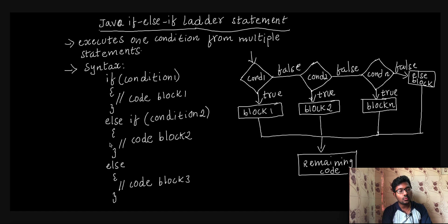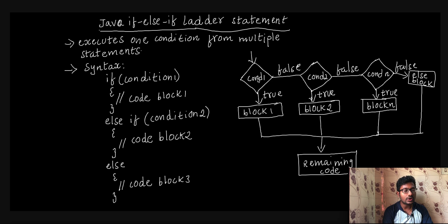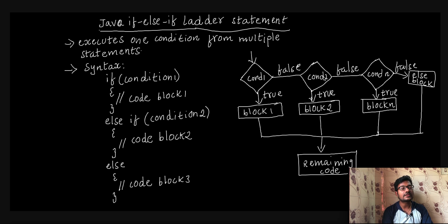If condition 1 is true, block 1 executes. If condition 1 is false, then we will check condition 2 and we will execute block 2. If condition 2 is false, then we will check any remaining conditions one by one.